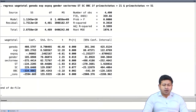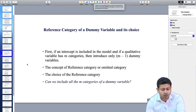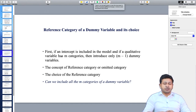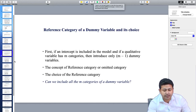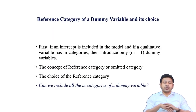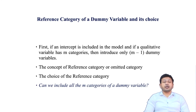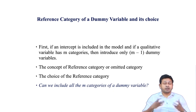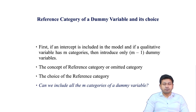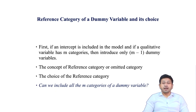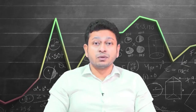A very relevant question is: can we include all the different categories — all m dummies — in the regression equation? For example, what if we include General, SC, ST, and OBC all together, or in the binary case include both Male and Female? If we include all categories for a variable, we face a specific problem known as the dummy variable trap. In the next lecture, we will discuss this very important concept and why it appears.